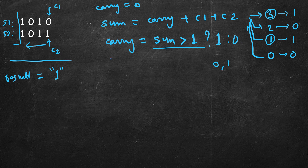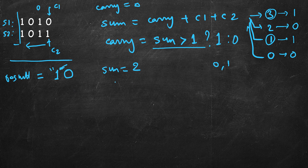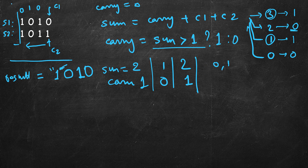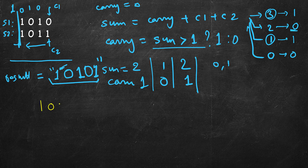Stepping through the example: carry 0 plus c1 1 plus c2 1 gives sum 2, which is even so we append 0 and carry becomes 1. Then carry 1 plus the next two digits gives sum 1, append 1, carry 0. Then sum 2 again, append 0, carry 1. We've reached the end but there's a carry, so we append 1. The result string in reverse order is then reversed to get 1 0 1 0 1, which is the correct answer.